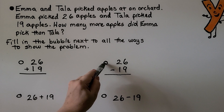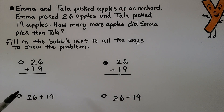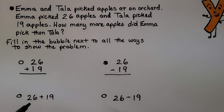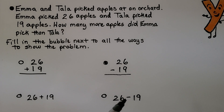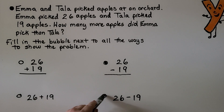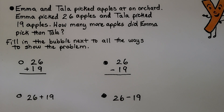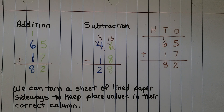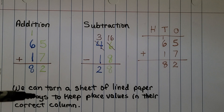We need to compare with subtraction — so 26 minus 19 written in place value columns would be one correct way, and 26 minus 19 written as a number sentence would also be correct. Make sure as you write these in place value columns that you keep the ones with the ones and the tens with the tens. You can turn a sheet of lined paper sideways to keep place values in their correct column.